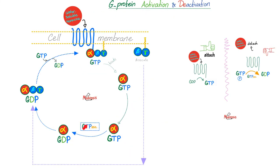G-protein activation and inactivation: when the hormone binds the receptor, this is activation — GTP binds the alpha subunit, and beta and gamma are kicked away. To become inactive, the exact opposite occurs: GTP converts to GDP, and the alpha subunit rejoins the beta-gamma complex. To become active again, get rid of GDP and welcome back GTP.